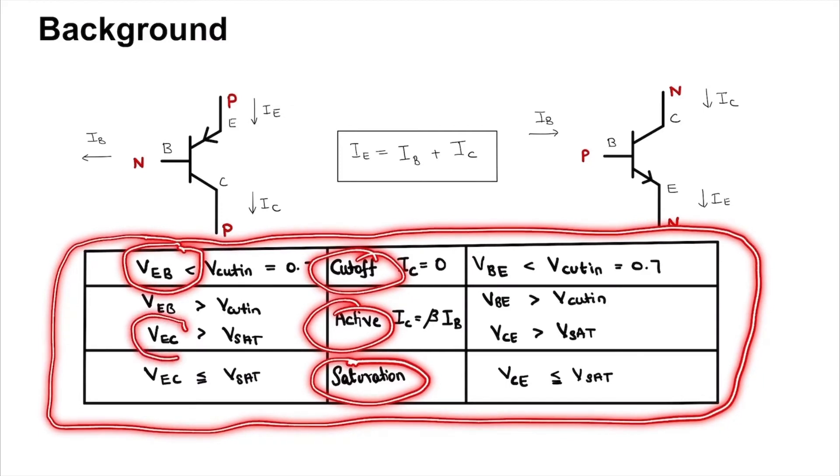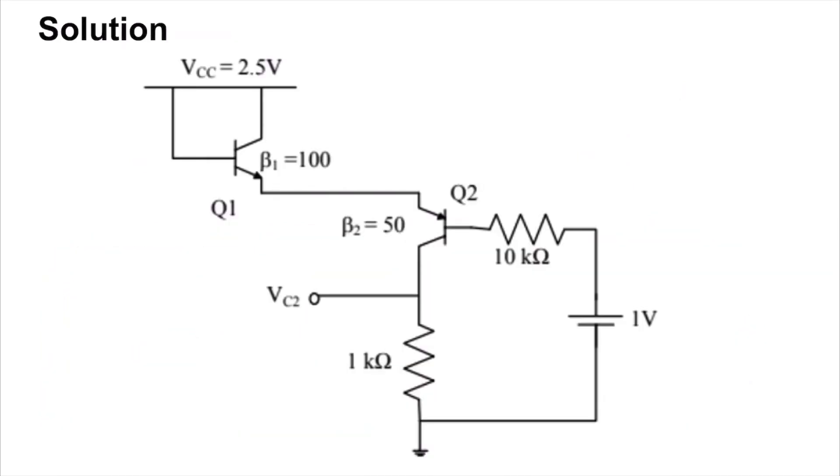The region is dependent purely on the base to emitter and collector to emitter voltage. In the problem we are given that the base to emitter drop here is 0.7 and that the emitter to base drop here is 0.7.